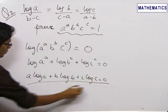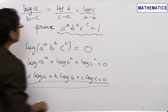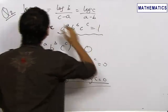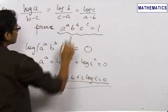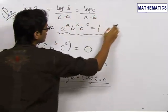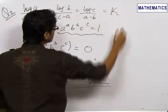So, we just need to prove a log a plus b log b plus c log c equals 0. Now, we are given with log a upon b minus c equals log b upon c minus a equals log c upon a minus b. We put this ratio equals k.